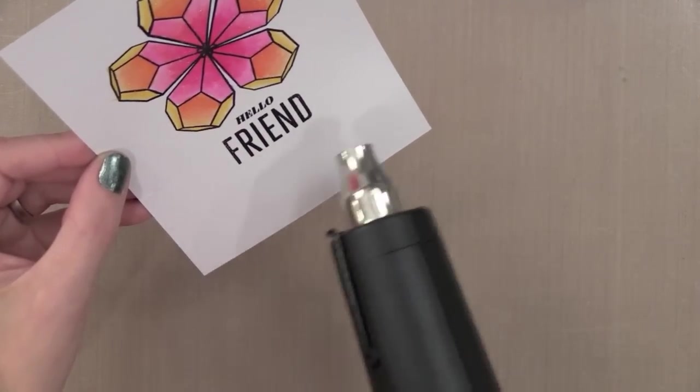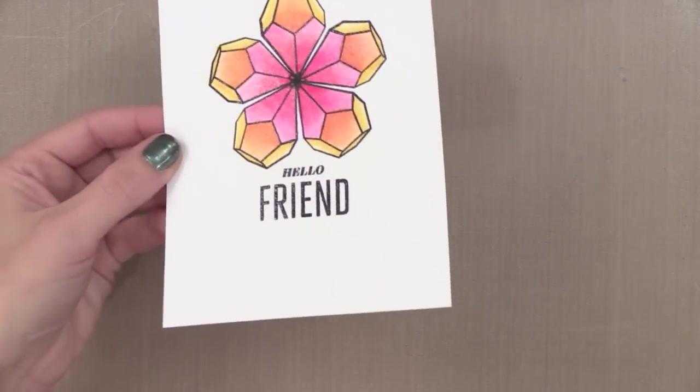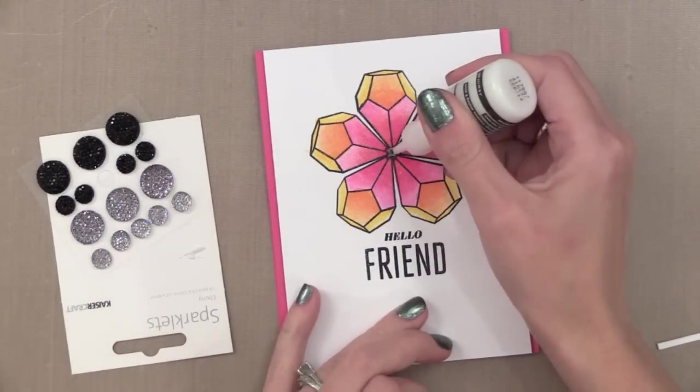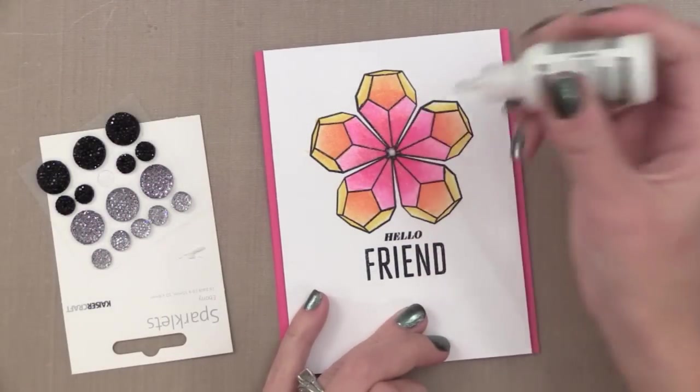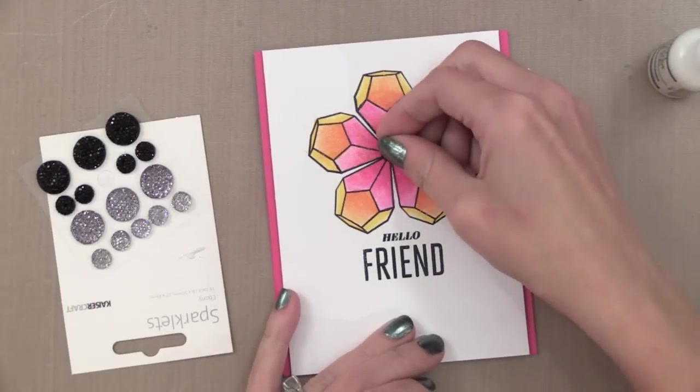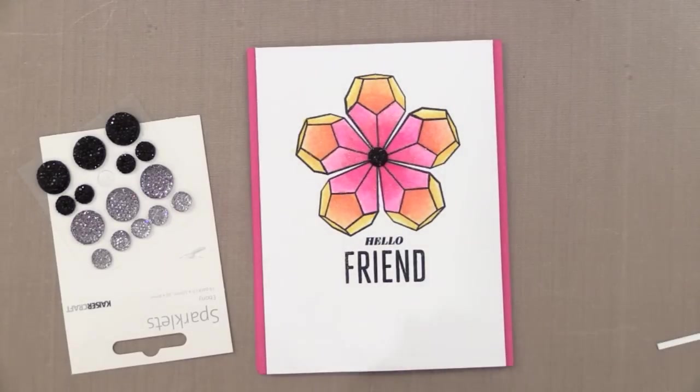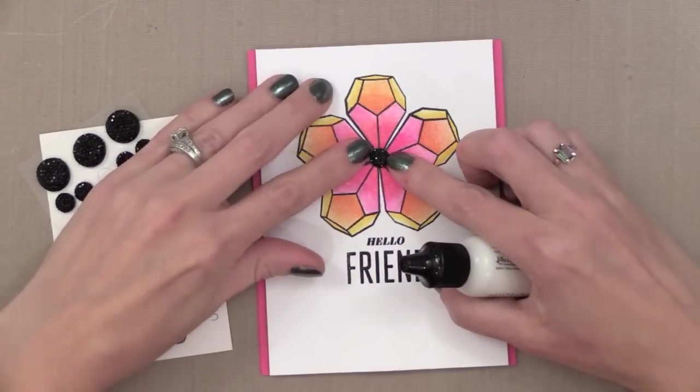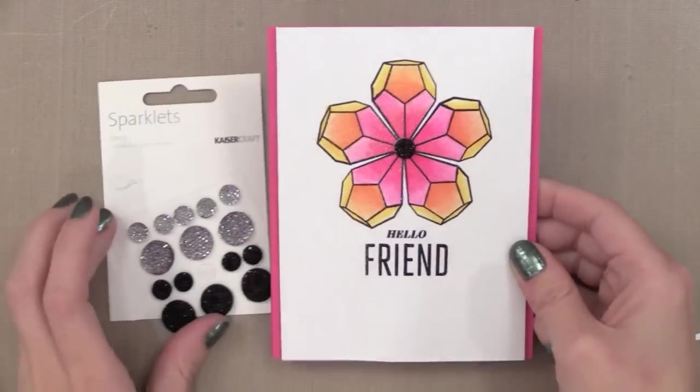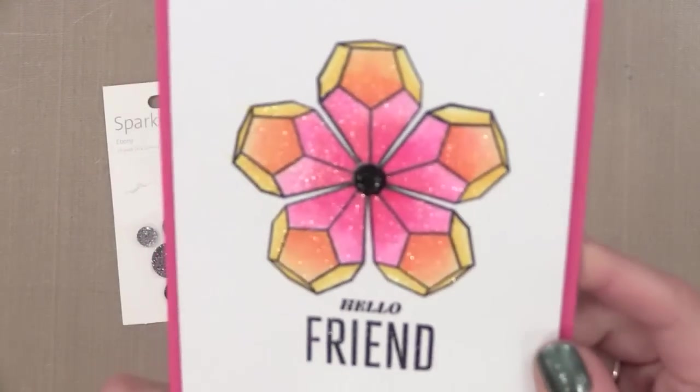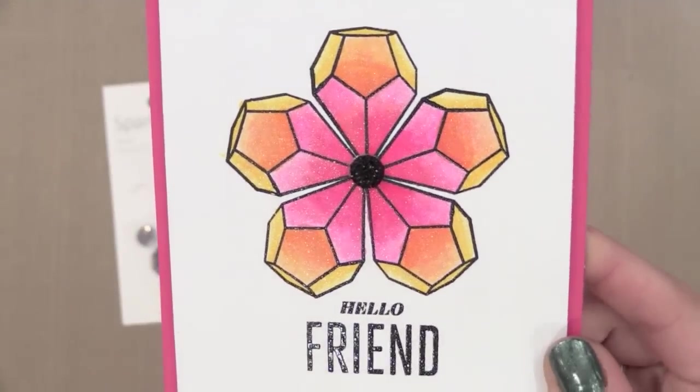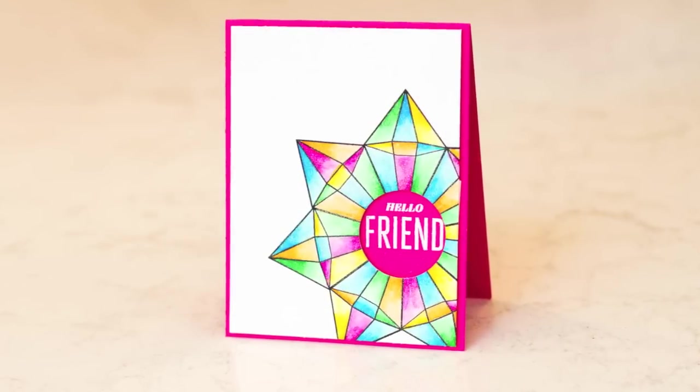Now for the center of this flower I decided to add an embellishment. So I found this little black gem and I wanted to add it with a strong adhesive so I used Multi Medium from Ranger. This is a great strong adhesive and just add it right to the center of my flower. I trimmed the sides of this stamp piece and put it onto a pink note card. I did it right side up this time. So I'm very proud of myself. But check out the shimmer that you get with that Wink of Stella. It's just beautiful in real life.